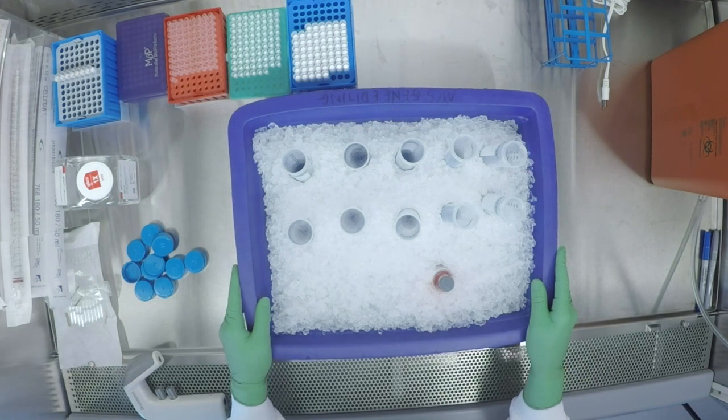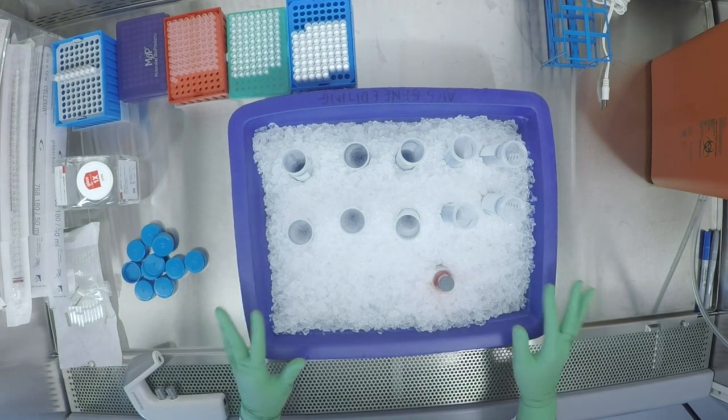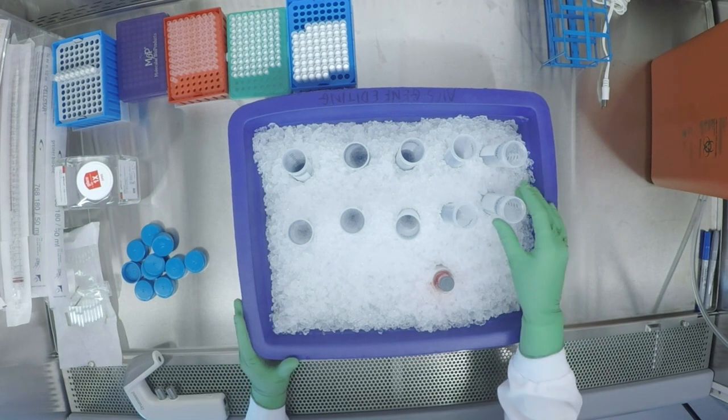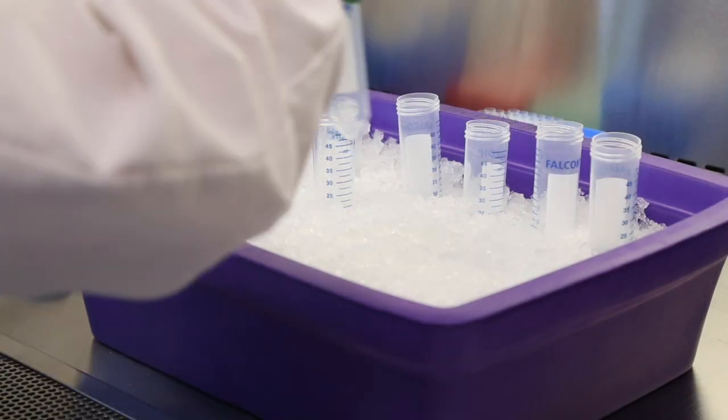Now that your Matrigel is completely thawed, you are ready to aliquot it. Start with a large ice bucket and ten 50 ml conical tubes with the lids already removed.